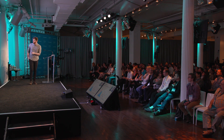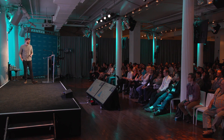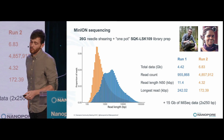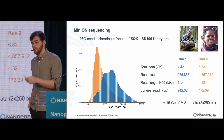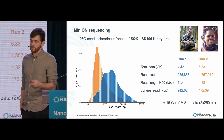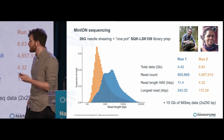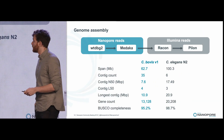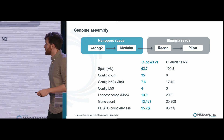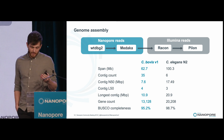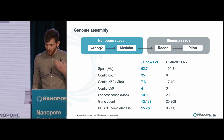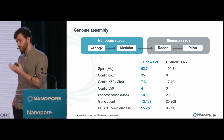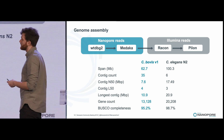By this point I had also generated 15 gigabases of MiSeq data with the help of Eunice down in Nairobi. I flew back to Edinburgh, Stefan base-called the data and sent me the FASTQ files, and then I could start assembling the genome. I used Wtdbg2, or Red Bean, then corrected errors with Medaka, and then used Racon and Pilon with the Illumina data to correct any remaining errors.